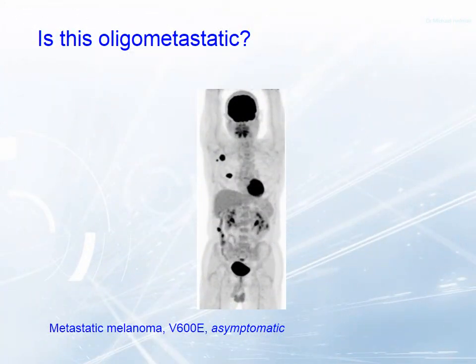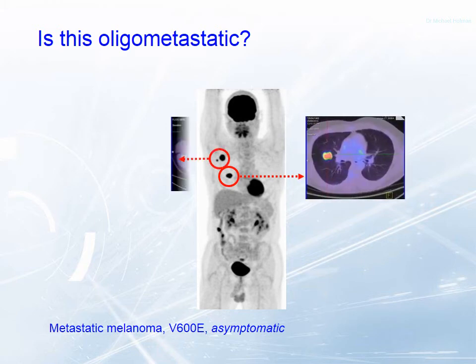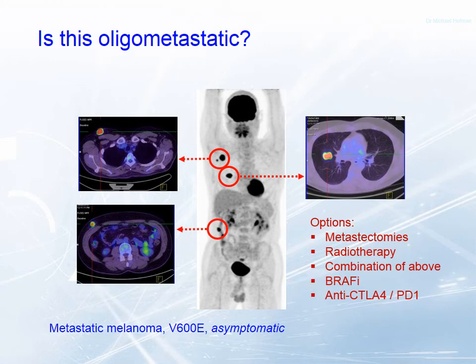What is oligometastatic disease? This patient has five lesions — one in the lung, one in the breast, and two subcutaneous soft tissue nodules. The literature variably defines an oligometastasis as one, up to three, or more recently up to five metastases. So the options for this asymptomatic patient with a V600E mutation — sensitive to BRAF inhibitors — include metastatectomies aiming for cure, surgery plus radiotherapy to other nodules, systemic BRAF inhibitor therapy, or new immune-activating therapies having spectacular results. Would anyone consider observation? None of these therapies will immediately make this patient feel better — they can only make the patient feel worse.